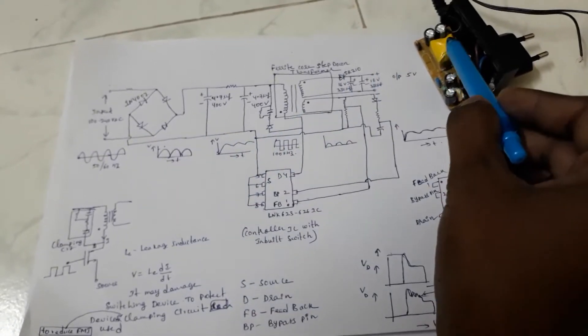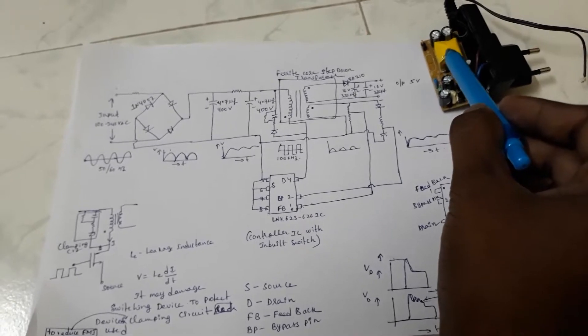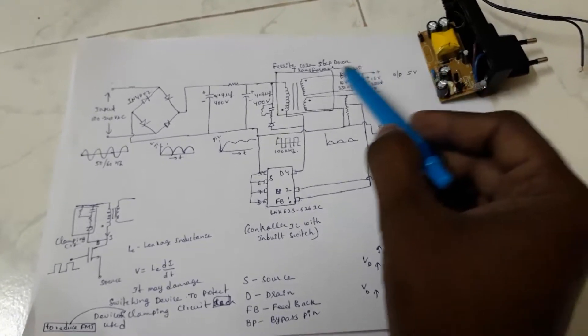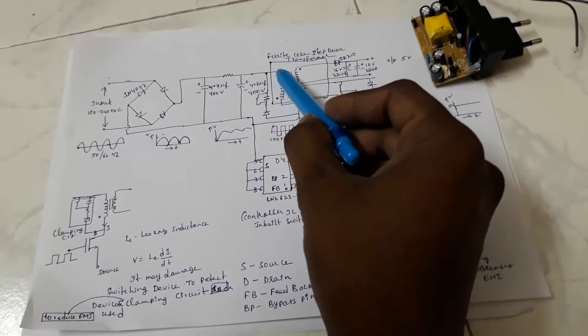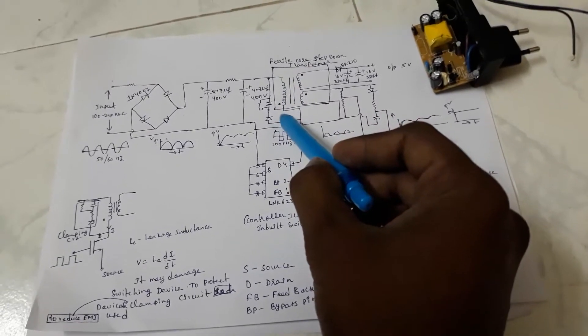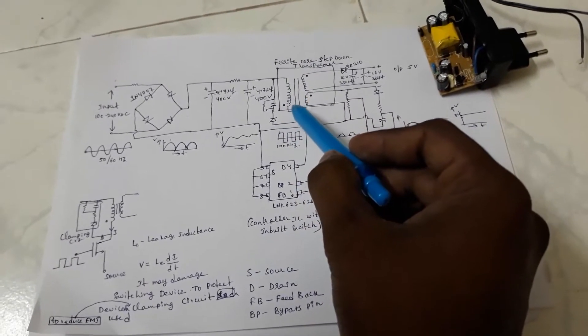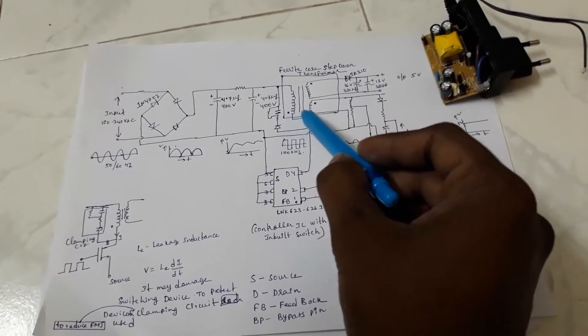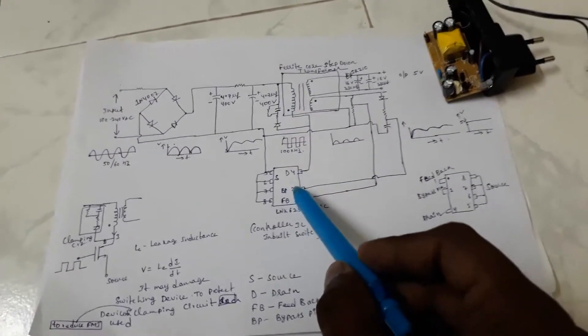The DC is fed to a flyback transformer, this is the flyback transformer. It is fed to the primary of this flyback transformer. There is a switching element in series with this flyback transformer primary winding. The controller IC used here is LNK 623626 IC.